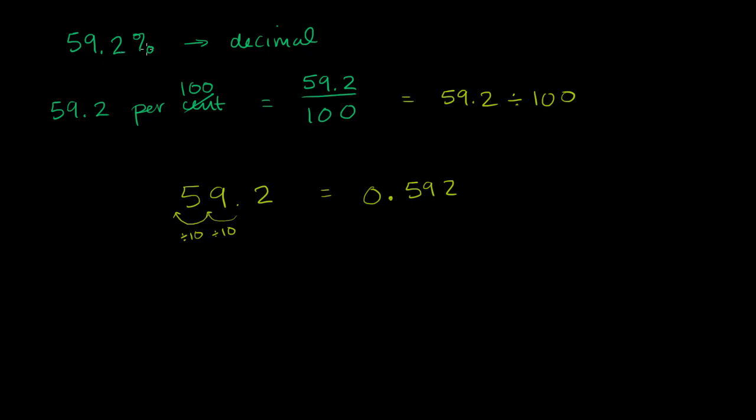We've written 59.2% as a decimal. We essentially just divided this by 100, which is dividing by 10 twice, moving the decimal once to the left, and then another time. Or since we're dividing by 100, moving the decimal twice to the left, and we get 0.592.